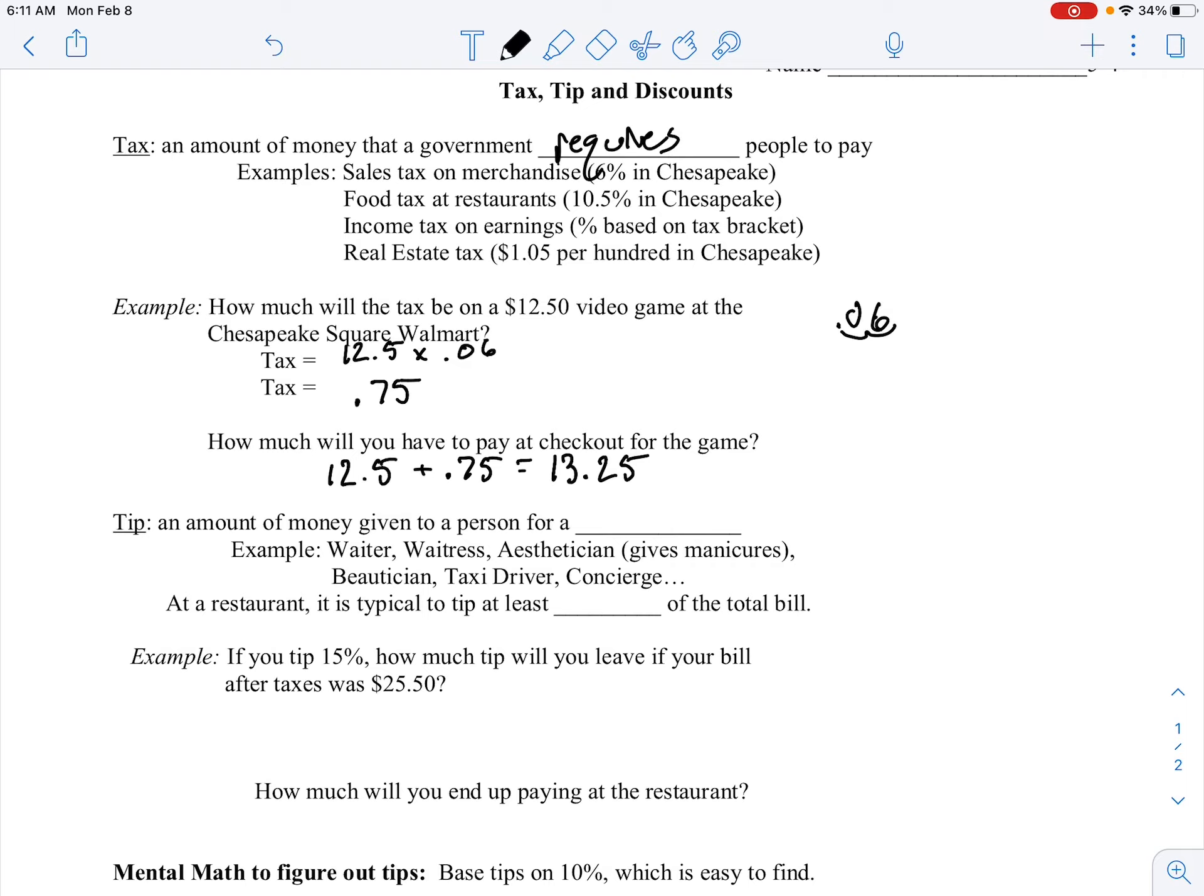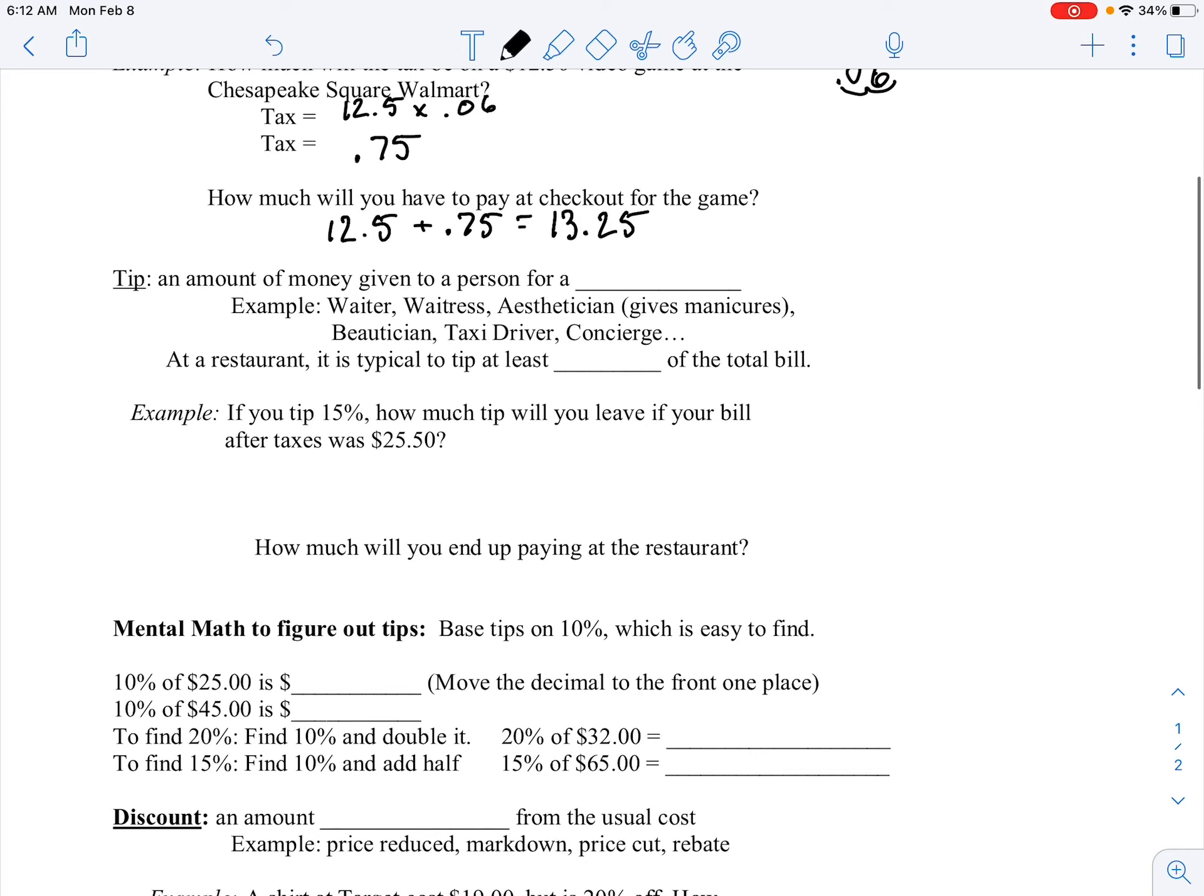So to find the amount of tax, we just multiply our original number times the percentage turned into a decimal, and that'll give the amount of tax. To figure out how much the total is, we just add that to the original amount. Alright, so now moving on to a tip.